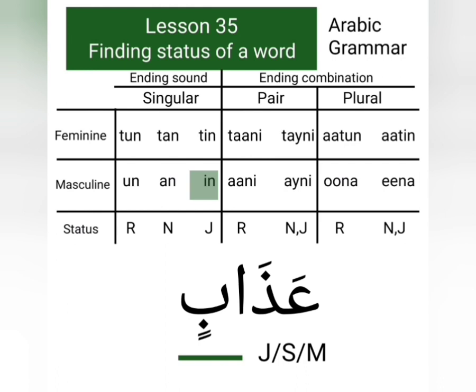Our first example is the word azabin. First we look for the feminine ending combinations and we see that it has no feminine ending combination: taani, taini, aatun, or aatin. Now we look for the ending sounds of the feminine words — this word has no ending sound tun, tan, or tin. So we go towards the masculine ending combinations. It does not have any masculine ending combination either.